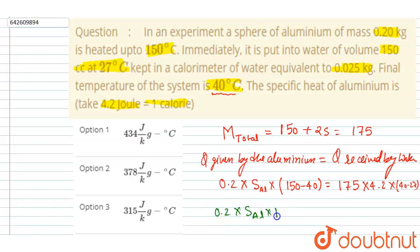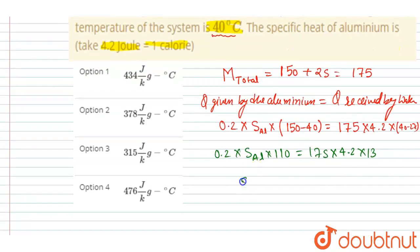Is equals to 175 into 4.2 into the change in temperature, which is 13. So if you will divide this, you will get S_Al equals 175 into 4.2 into 13 in division, you will write 110 into 0.2.